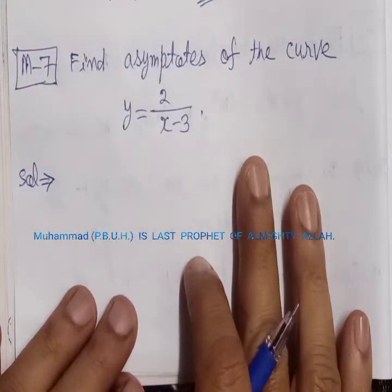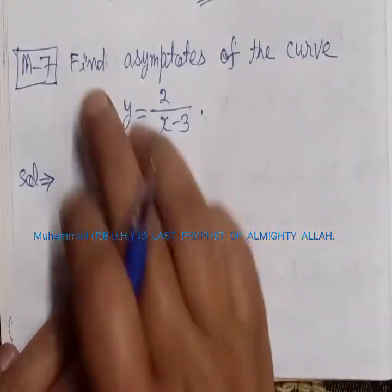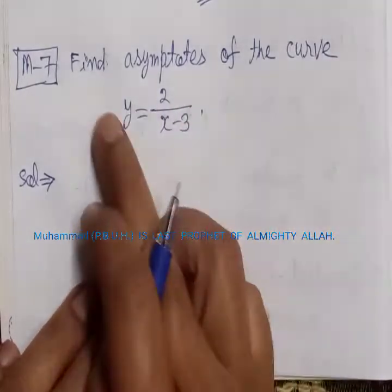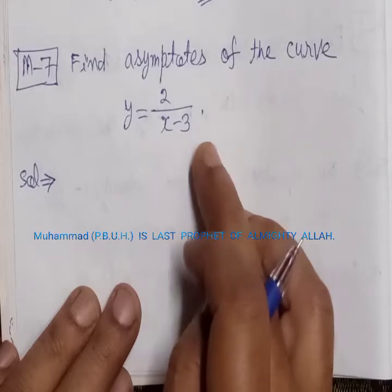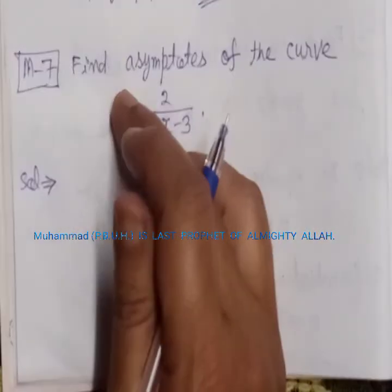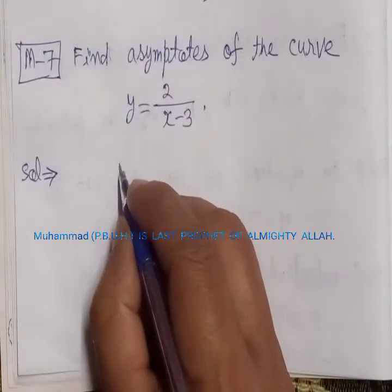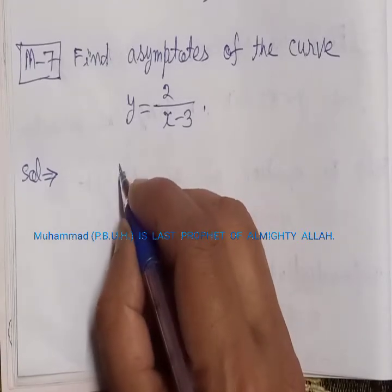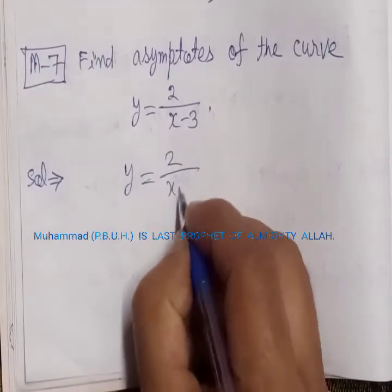Bismillahirrahmanirrahim. This problem is from differential calculus, the asymptotes chapter. We need to find the asymptote of the curve y is equal to 2 upon x minus 3.